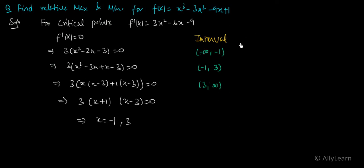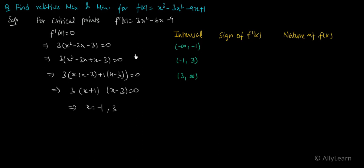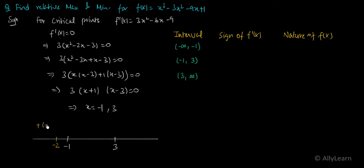Now we check the sign of f'(x) in each interval to see if the function is increasing or decreasing. In the interval (-∞, -1), take a point, say x = -2. At x = -2: f'(x) = 3(x+1)(x-3). The factor 3 is positive, (-2+1) = -1 is negative, (-2-3) = -5 is negative. Negative × negative × positive = positive. So f'(x) > 0, meaning the function is strictly increasing in this interval.